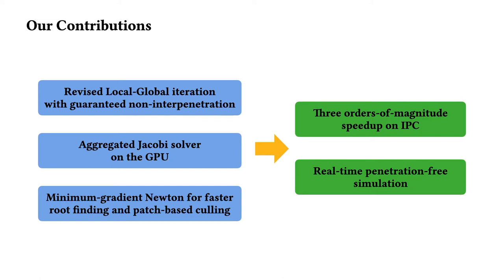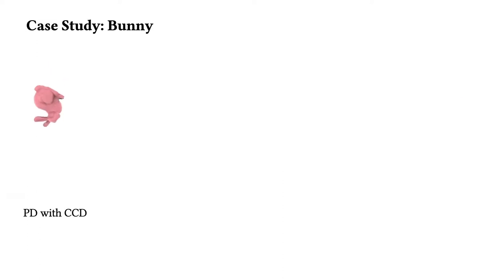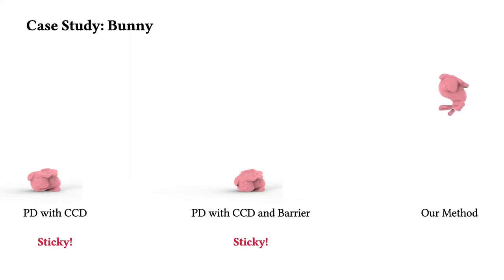Now let's take a closer look at how this is achieved. First, it is important to note that naively applying projective dynamics with CCD to ensure non-interpenetration will lead to sticky artifacts. This is because CCD prevents collision penalties to be generated in PD, and thus the contacting vertex is short of the necessary momentum to leave the plane. The sticky artifact persists even with strong IPC barrier because these sharp energies cannot be accurately resolved by PD. Instead, we propose a restitution-inspired local projection to ensure non-sticky and non-interpenetrating results.